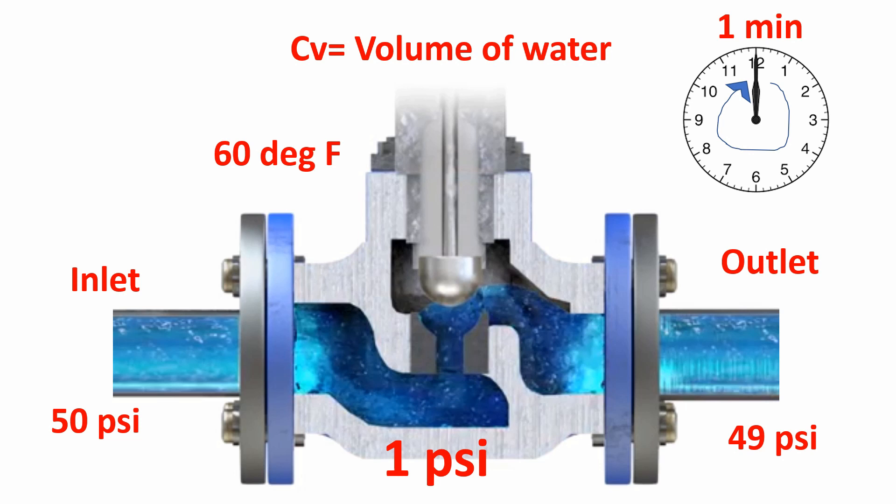And it gets into the valve body and then comes to the downstream or outlet with 49 psi. That is, the pressure difference is 1 psi. And this all occurred within one minute of time. So this is basically the control valve flow coefficient.